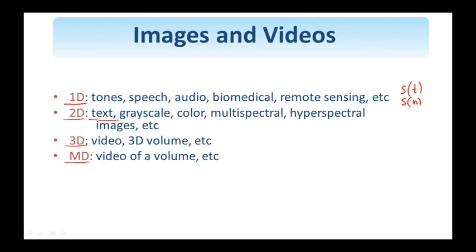Text and grayscale images are certainly two-dimensional signals, where the independent variables represent space — I can call it S(X, Y). Color, multispectral, and hyperspectral images have two spatial coordinates, and the amplitude can be viewed in two ways: as a vector — a three-by-one vector for color since there are three different channels, or a seven-by-one for a multispectral image — or as three-dimensional images with two spatial and one spectral coordinate.